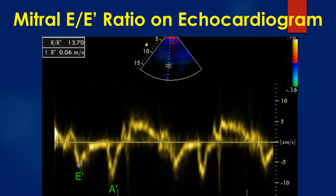After that, color tissue Doppler, also known as Tissue Velocity Imaging or TVI mode, is switched on to assess tissue Doppler. The cursor is placed over the medial mitral annulus and the tissue Doppler tracing is obtained. E prime velocity is then measured and stored.